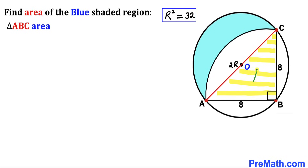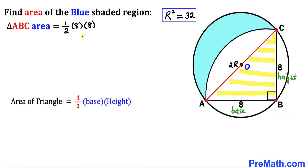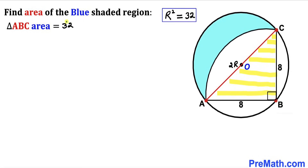Next, let's calculate the area of right triangle ABC. Recalling the area formula: area equals one-half times base times height. In our case the base is 8 and the height is 8, so the area is one-half times 8 times 8, which gives us 32. The triangle ABC area is 32 square units.